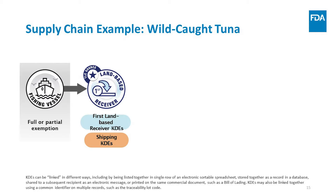The tuna arrives at port and is sold to a seafood company who will sort the fish and send them on to be processed. The seafood company is the first land-based receiver since they are the person taking possession of the food for the first time on land directly from a fishing vessel. As the first land-based receiver, the seafood company must maintain key data elements specifically related to their first land-based receiving of the tuna.